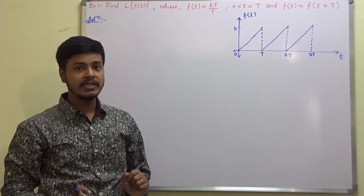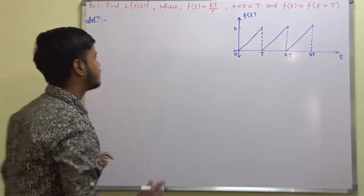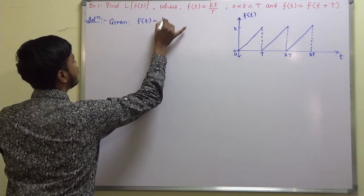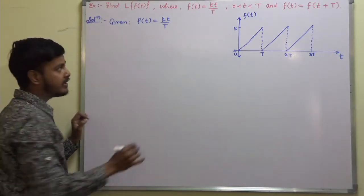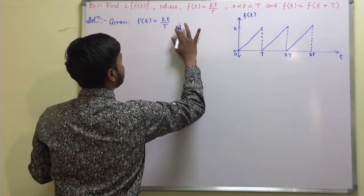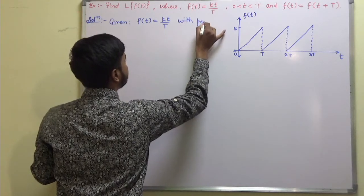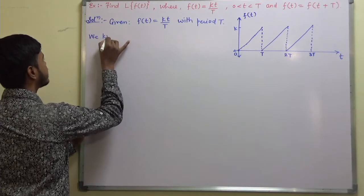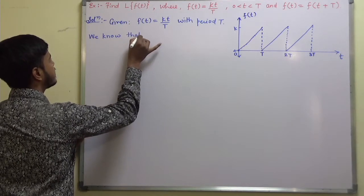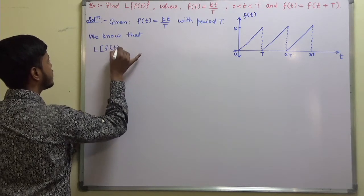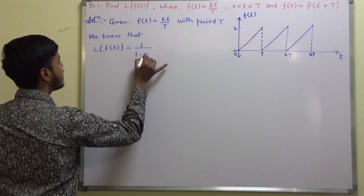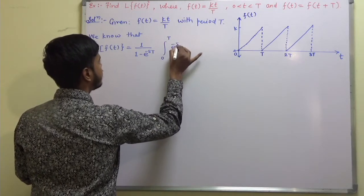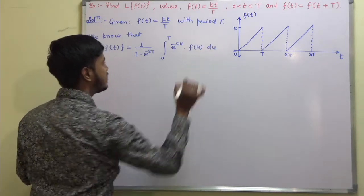There is no need to draw this graph in the examination because we are already given that the function is periodic with period T. So we are given f(t) = kt/T with period T. Now, we know that the Laplace transform of a periodic function f(t) is: 1 upon (1 minus e^(−sT)) times the integral from 0 to T of e^(−su) times f(u) du.